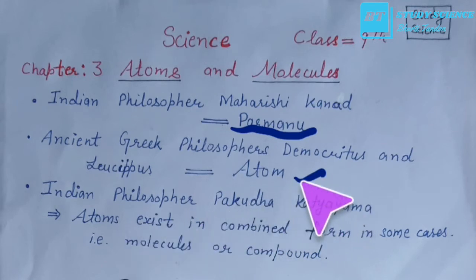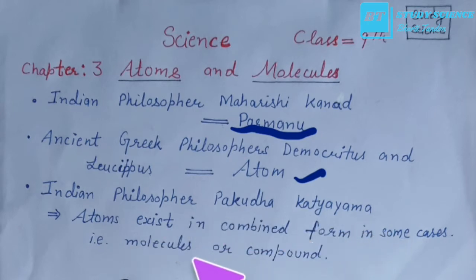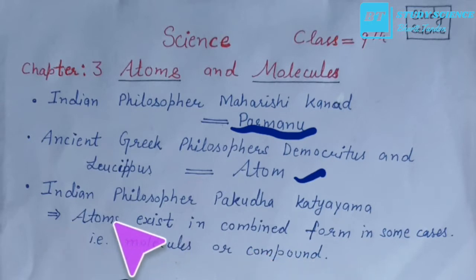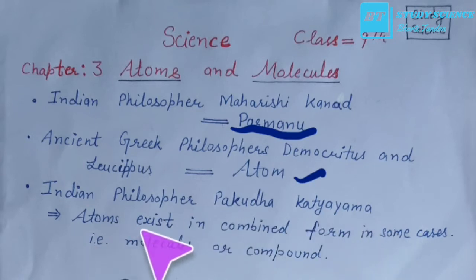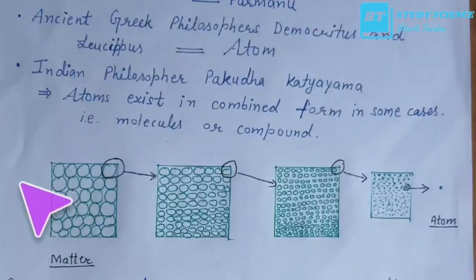During the same era, Indian philosopher Pakuda Katyaayam suggested that atoms may not exist only in a free state but may also exist in a combined state in the form of molecules or compounds. उन्होंने कहा कि atoms free exist करते हैं लेकिन combined form में भी exist करते हैं और वहाँ वो molecules और compounds बनाते हैं।